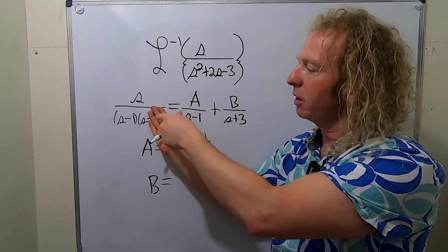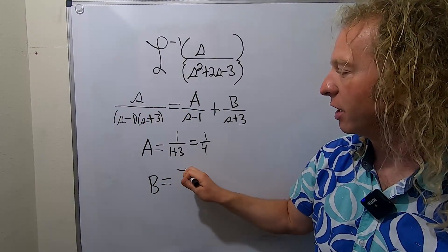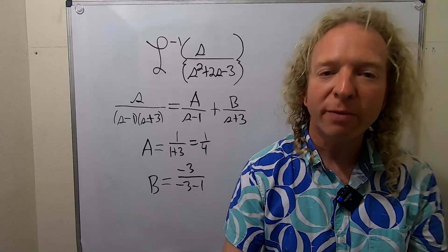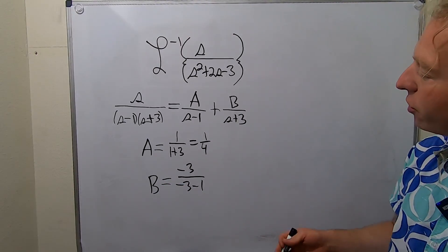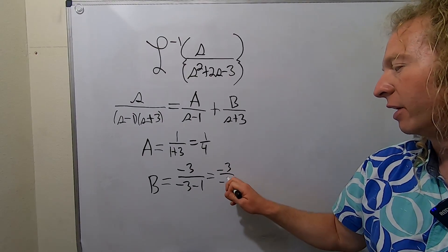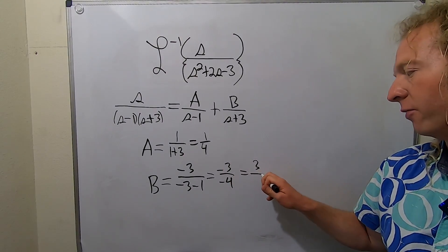So you just come over here, and you just put negative 3's where the s's are. So it'll be negative 3 over negative 3 minus 1. It's a super powerful technique. You can use regular partial fractions, but this is the way to go. So this is negative 3 over negative 4. So this is 3 fourths.